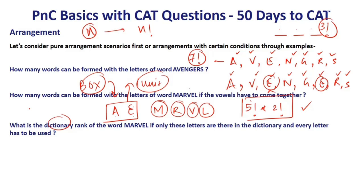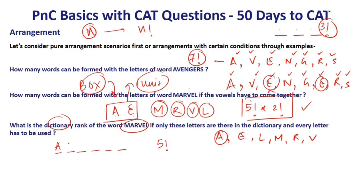Dictionary ranking problem using the letters of MARVEL. First arrange them alphabetically: A, E, L, M, R, V. To find the rank of MARVEL: words starting with A have 5 remaining letters arranging in 5! = 120 ways. So there are 120 words starting with A.